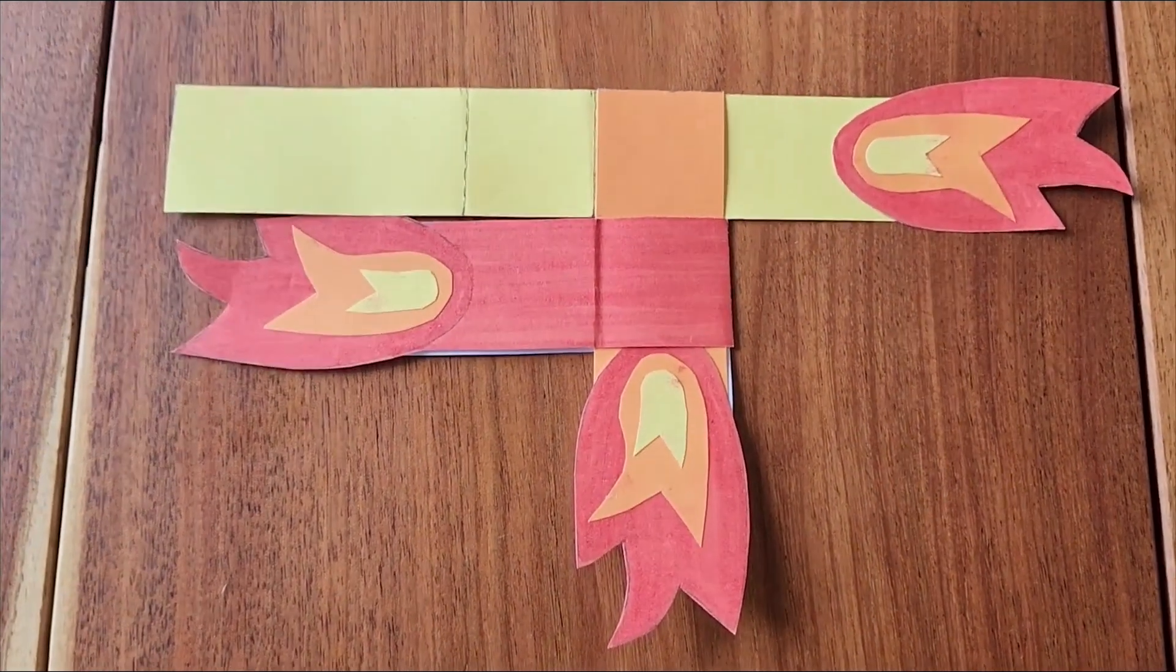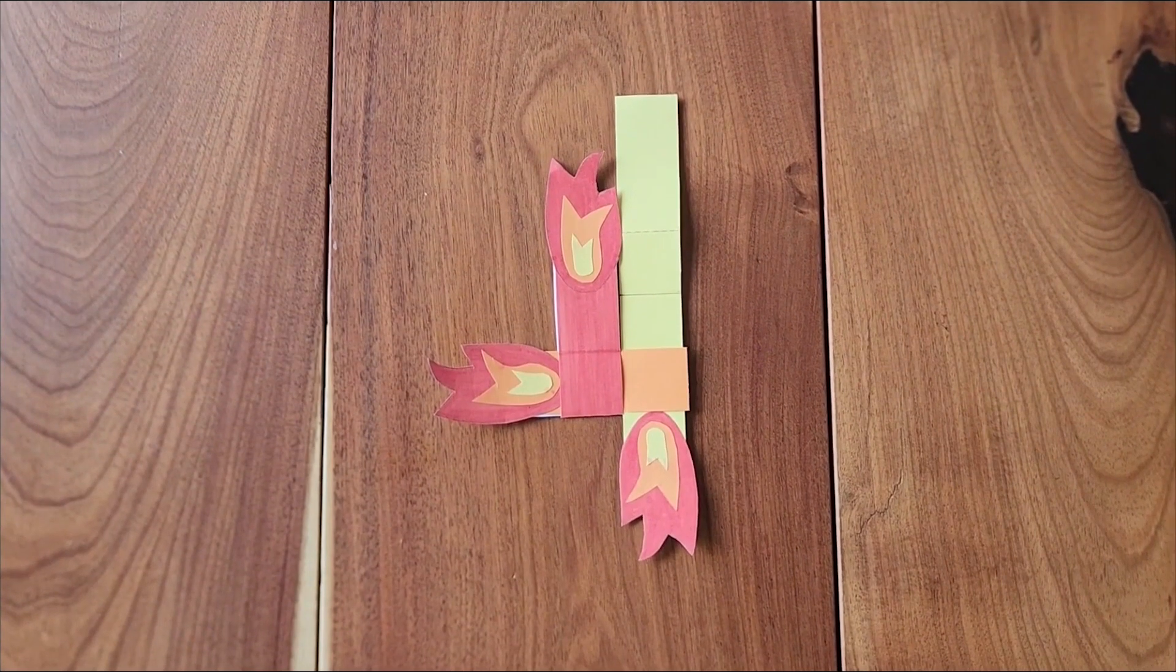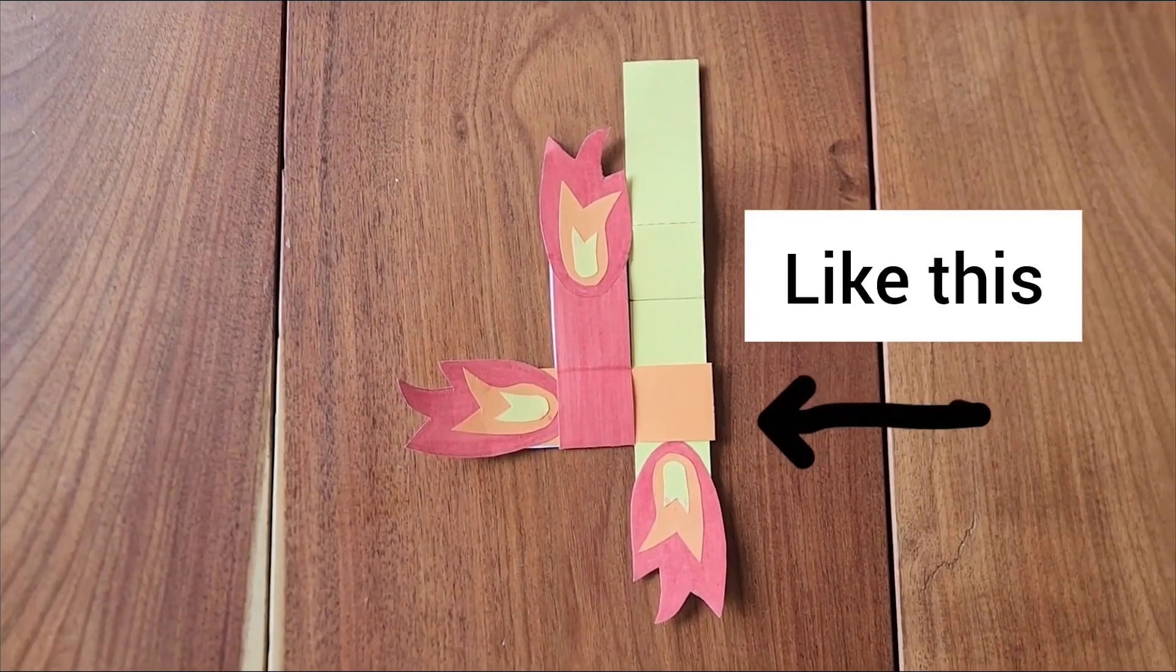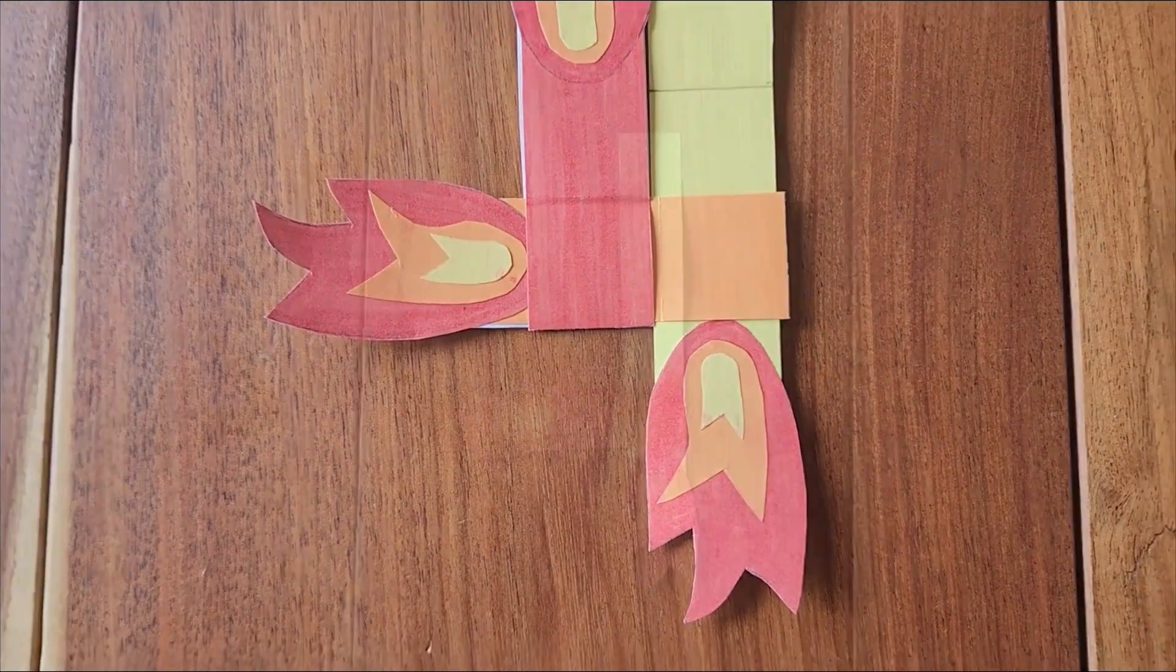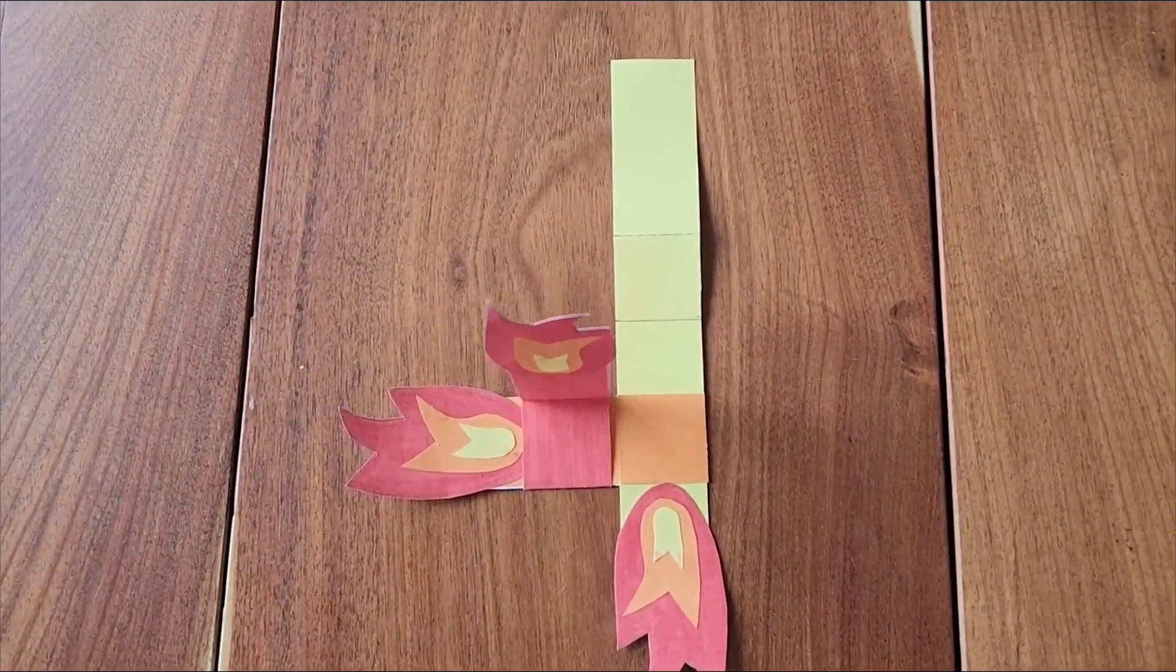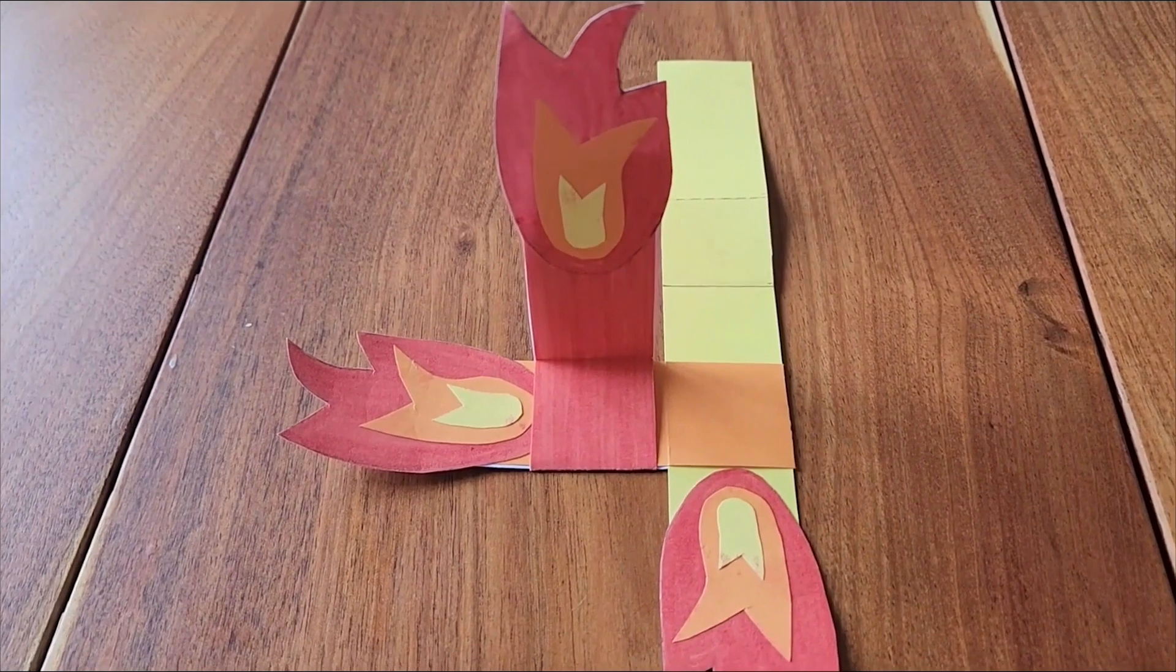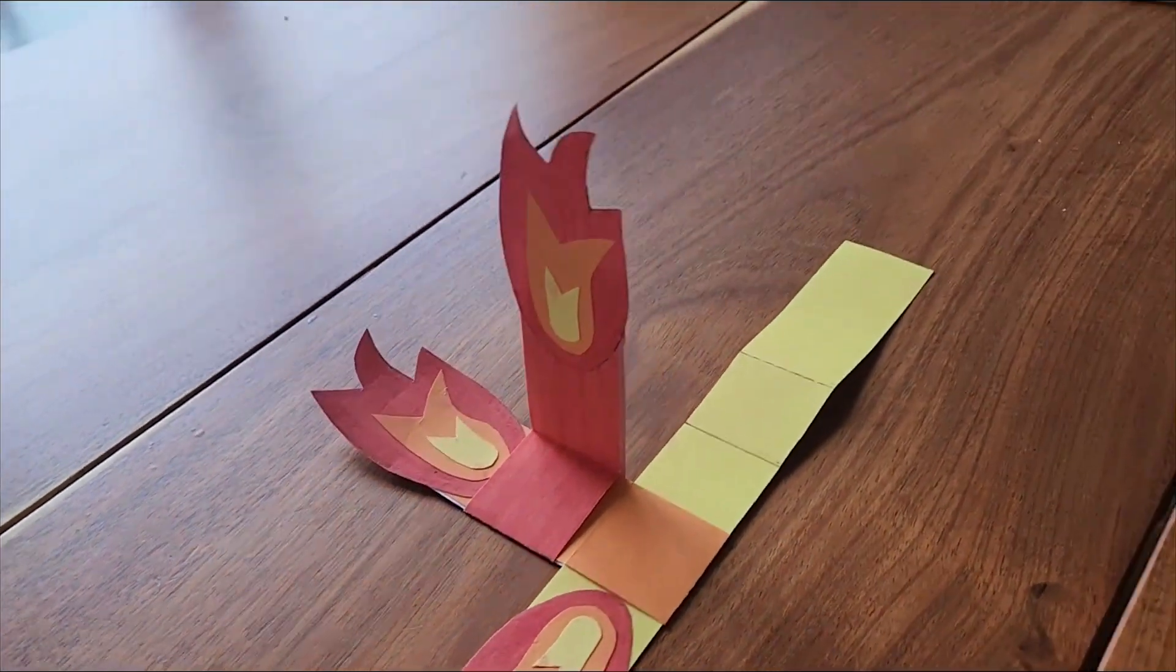Move the folded orange strip up closer to the flame on the yellow strip. Then fold the red strip so it is vertical, sticking straight up in the air.